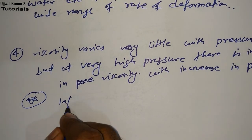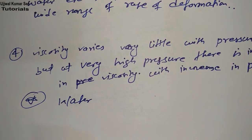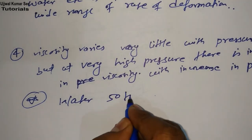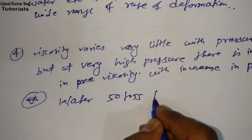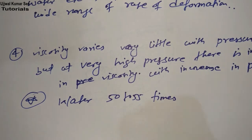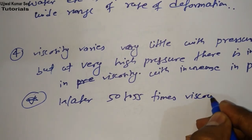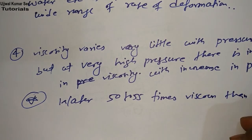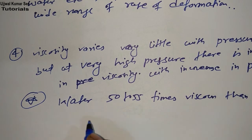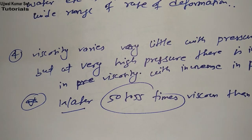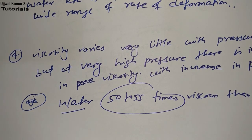Star point: in case of water, it is 50 to 55 times more viscous than air. Water is more viscous than air — 50 to 55 times. You need to remember this.